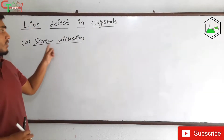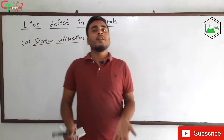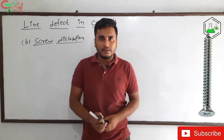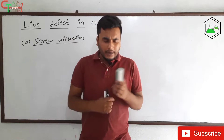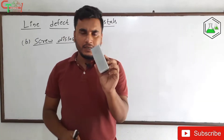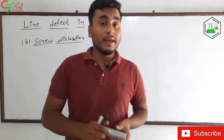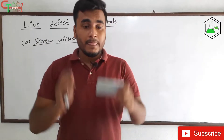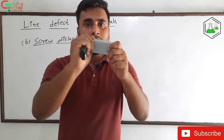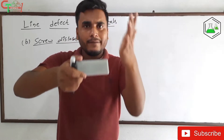Let's understand screw dislocation. This defect is called screw dislocation because it actually looks like a screw. Now, consider this duster as the crystal. In this defect, we apply force — I am using my right hand to apply force in one direction and my left hand to apply force in the opposite direction.